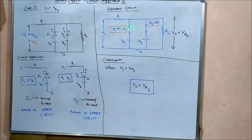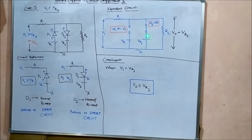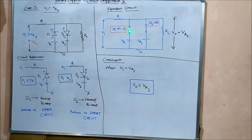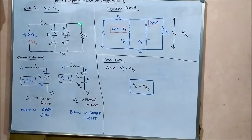Since D1 is open circuited, no current flows through that branch and Vr1 goes out of the question. Since D2's terminals are short circuited, the entire voltage Vr2 appears across the load resistance RL as output. So in case two, when Vi is greater than Vr2, the output voltage equals Vr2.